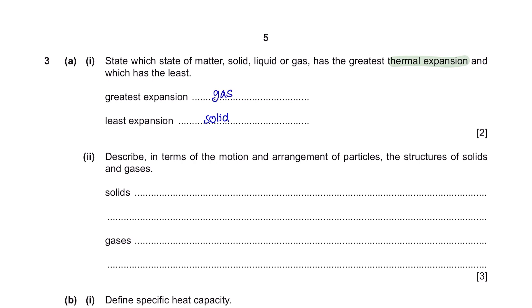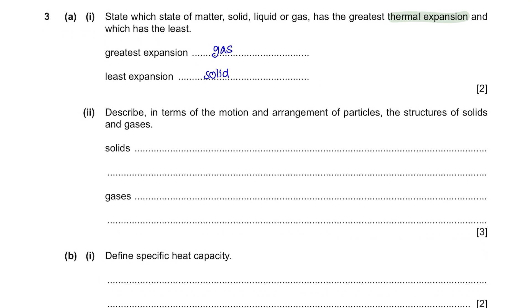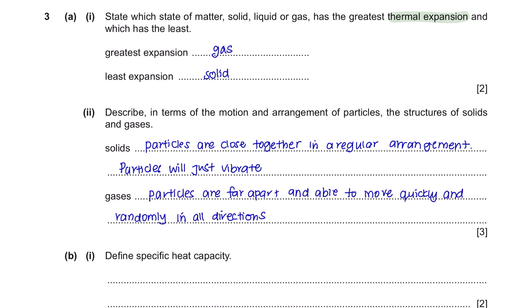Part 2. Describe in terms of the motion and arrangement of particles, the structure of solid and gases. Solids have their particles close together in a regular arrangement. There are strong forces of attraction between particles so they cannot move and they would just vibrate. Whereas gases particles have very weak forces of attraction so they are far apart and able to move quickly and randomly in all directions.